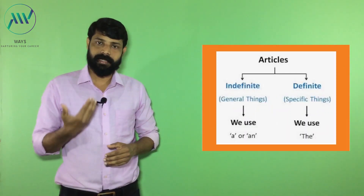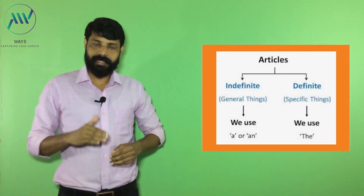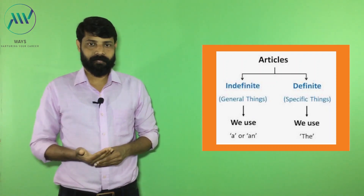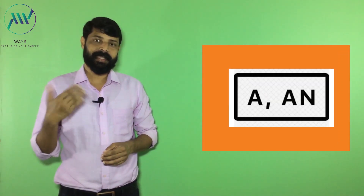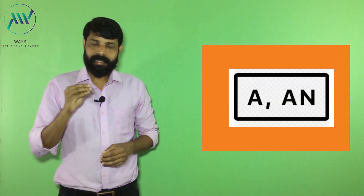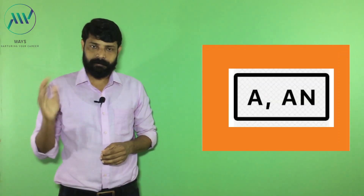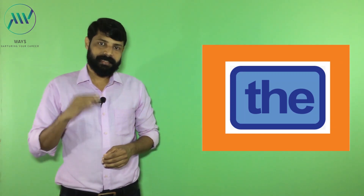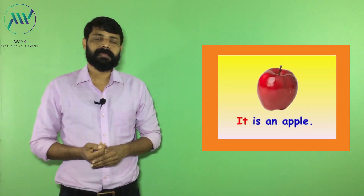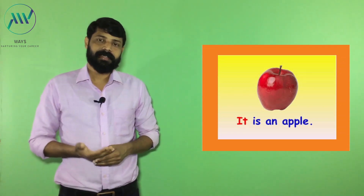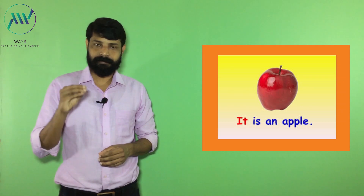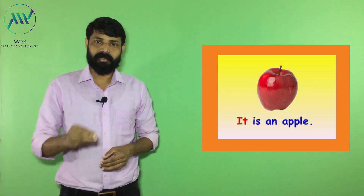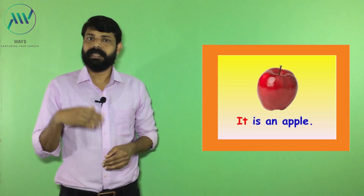Definite and indefinite articles are used based on whether the noun is specific or general. If the noun is used in general, we use 'a' and 'an' as determinants. See some examples. 'It is an apple.' In this example, we used 'apple' in general, so we used 'an' as a determiner because the noun 'apple' starts with a vowel sound.